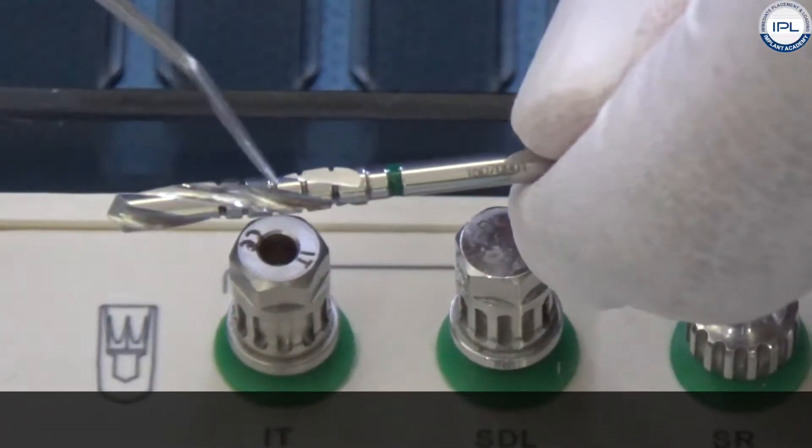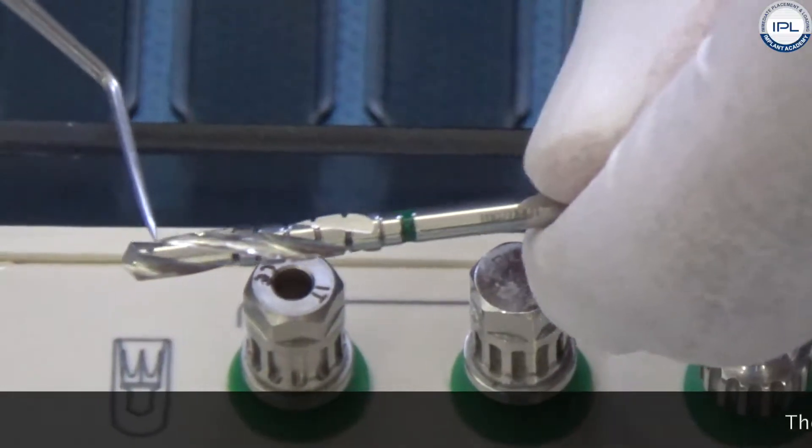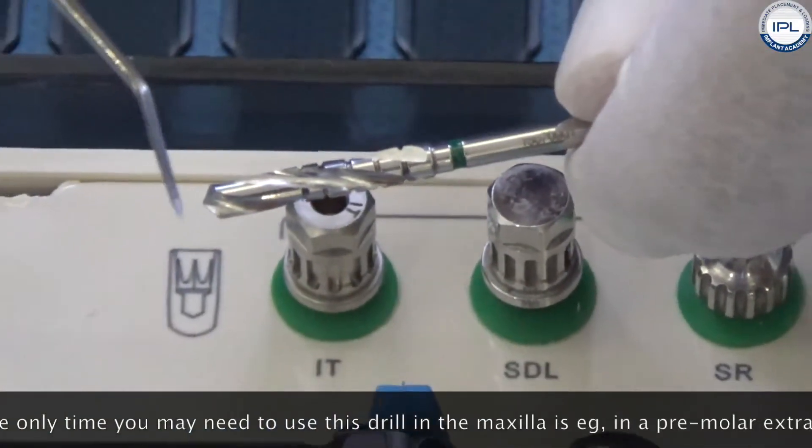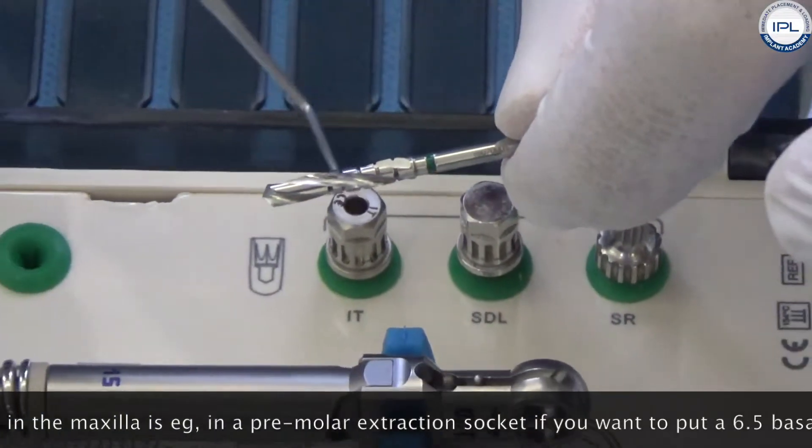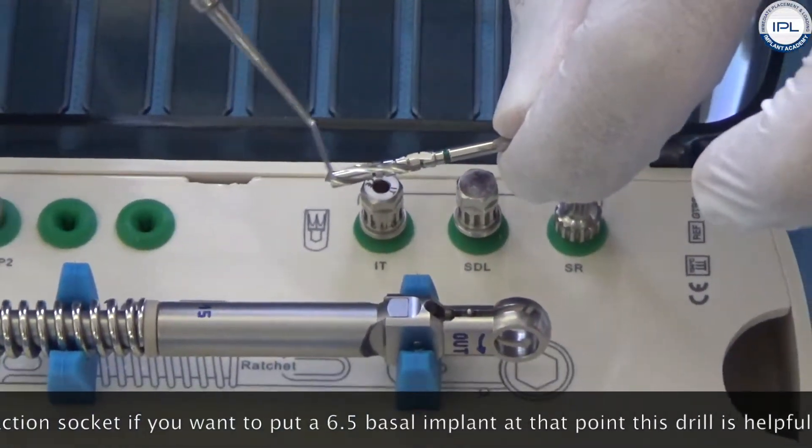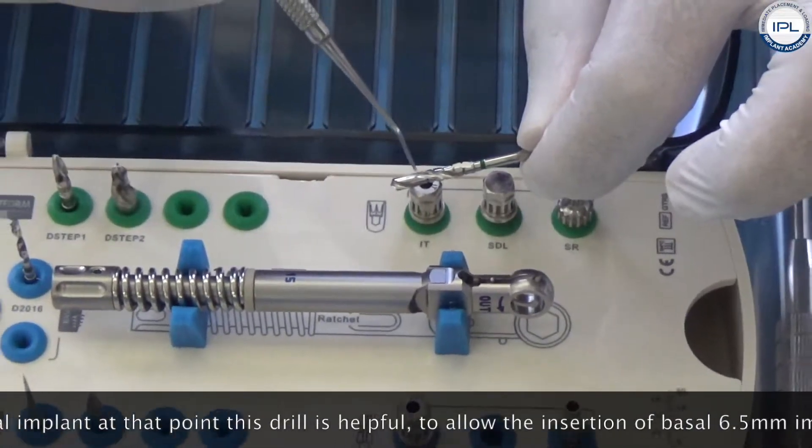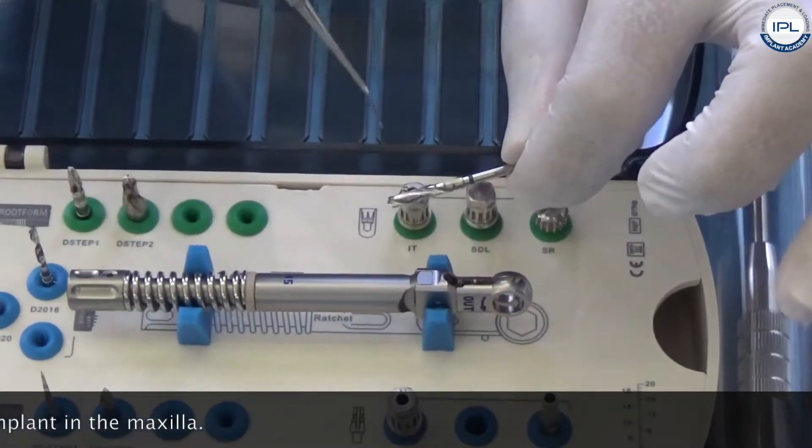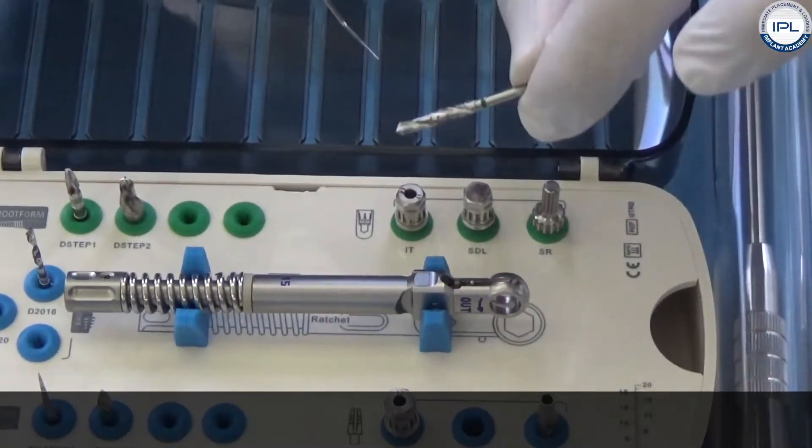You don't need to use this drill in the maxilla. The only time you may need to use this drill in the maxilla is for example in a premolar extraction socket if you want to put a 6.5 basal implant. At that point this drill is helpful to allow the insertion of the basal 6.5 implant in the maxilla.